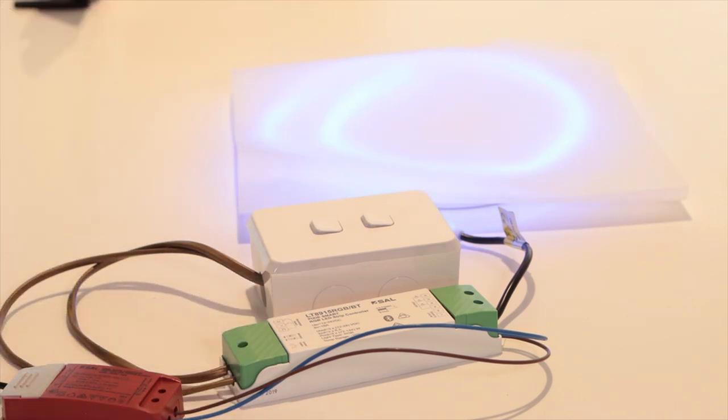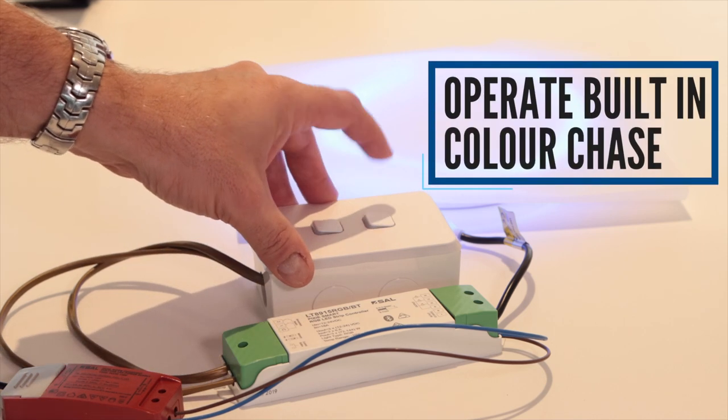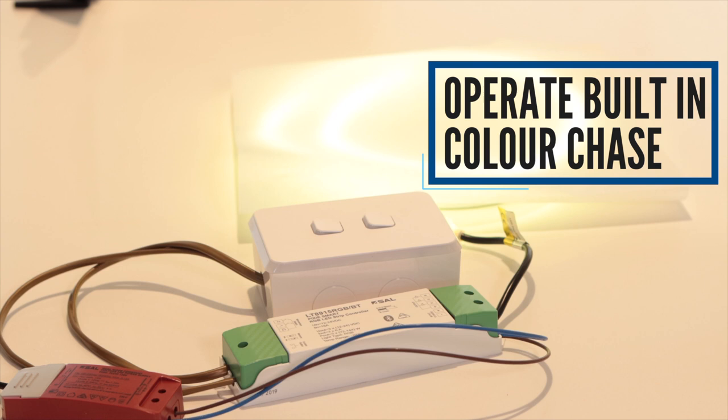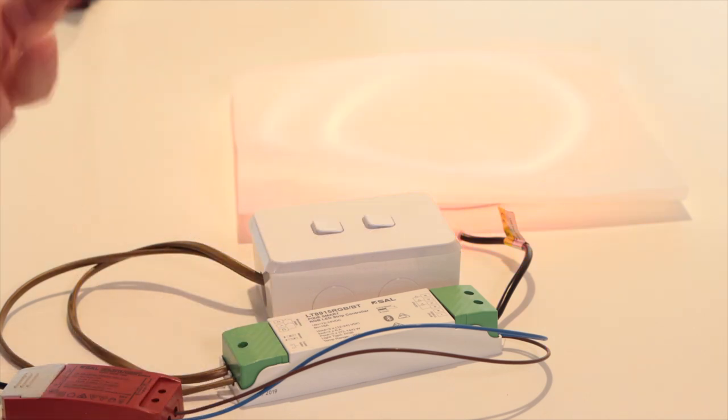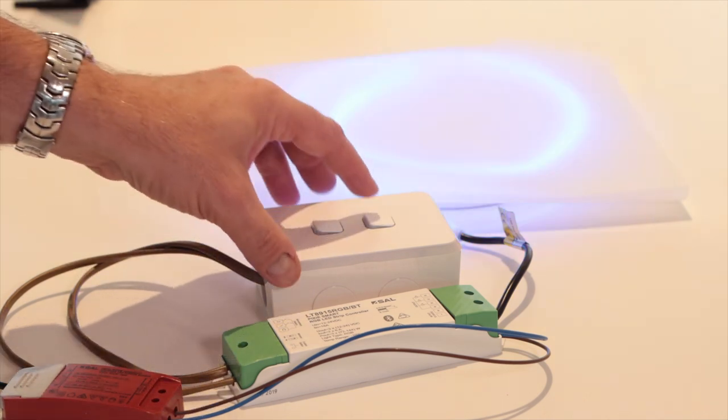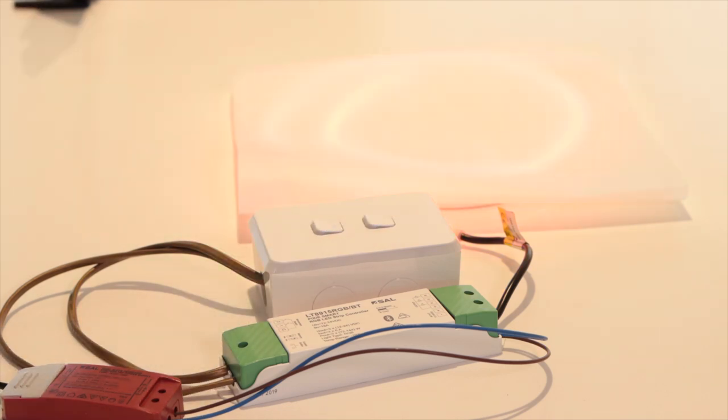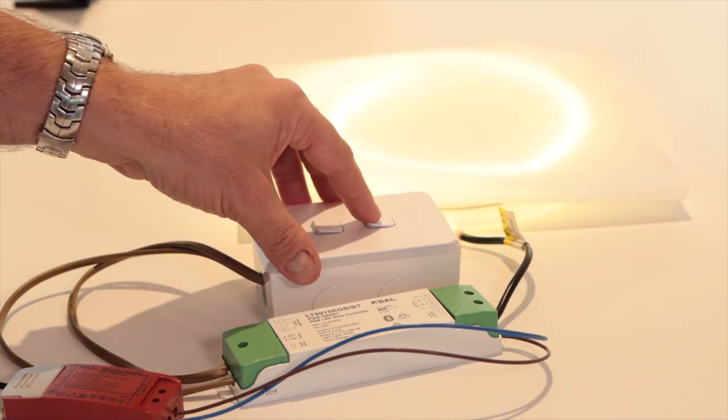The secondary input enables us to execute some color chases. So if I press one you can see we've got a color chase going, and then I can simply give it a single click to go through some different color chases, some strobing, some flashing.